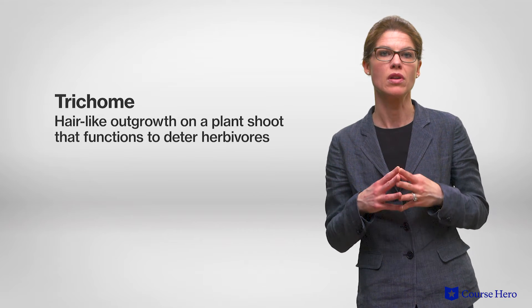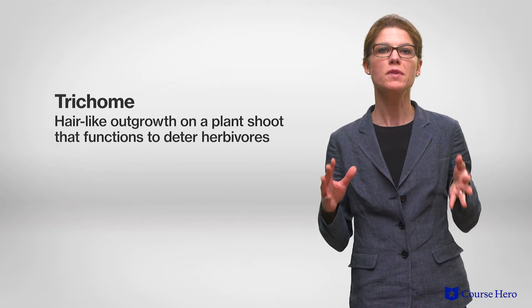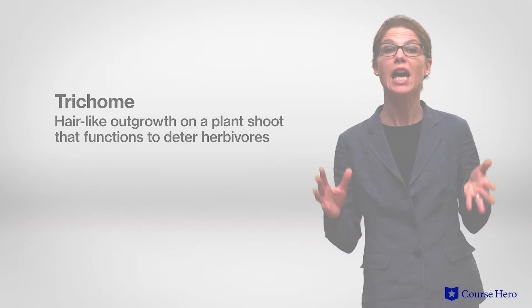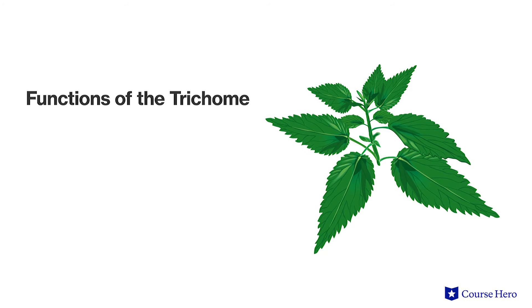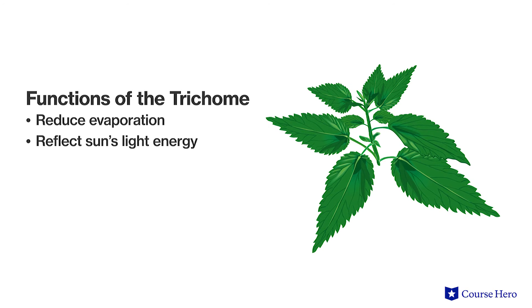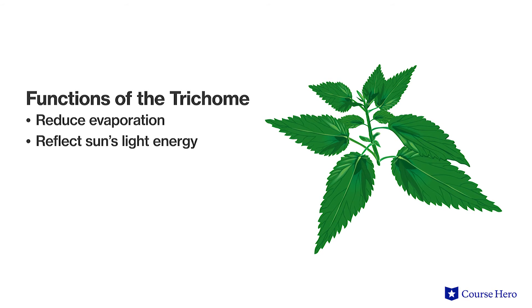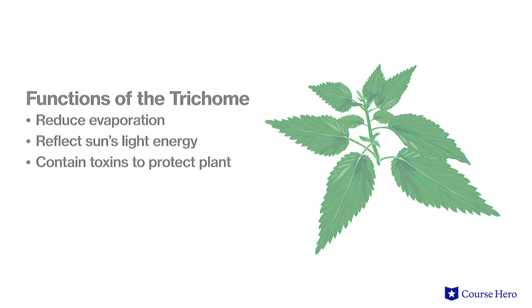A trichome is a hair-like outgrowth on a plant shoot that functions to deter herbivores. Trichomes protrude from the epidermis and offer an added layer of protection. They reduce evaporation from plant surfaces, reflect the sun's light energy, and may contain toxins that protect plants from herbivores. The sting and trichomes of the nettle plant are an example of this toxic protection.